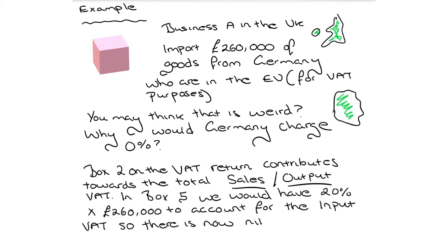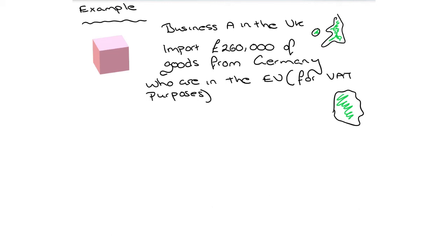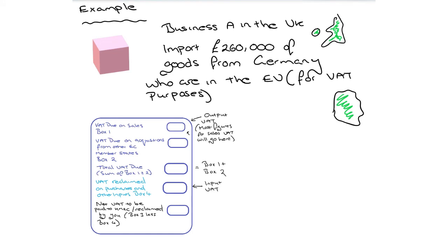However, in box 4, we would have 20% times the £260,000 to account for the input VAT. So there's now actually a nil effect on that. And if we actually have a look at the VAT return here, you can see there, that in box 2, you'd have this 20% for the output VAT, and then in box 4, you'd have the 20% there as well. So there is absolutely nil effect on VAT, on your VAT return, because we'd have the £52,000 in box 2, and £52,000 in box 4. So one minus the other is nothing.